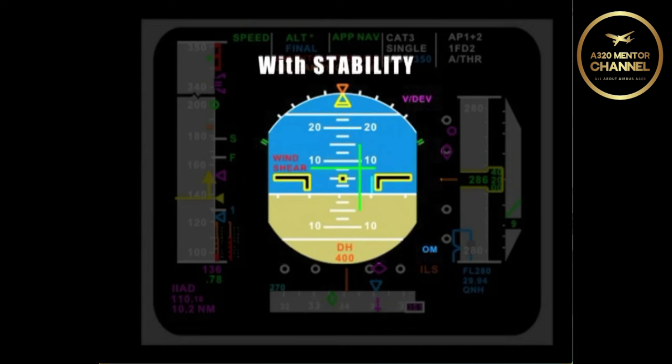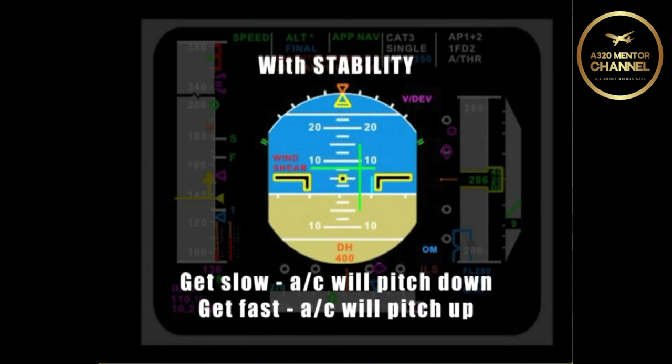With it, if you get slow, the nose will pitch down slightly to keep from getting too slow and if you get fast, the nose will pitch up to keep you from over speeding.